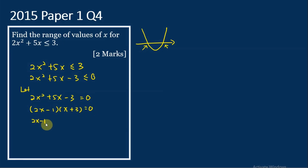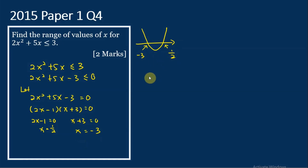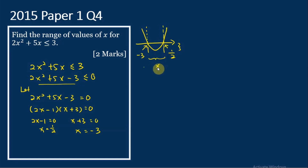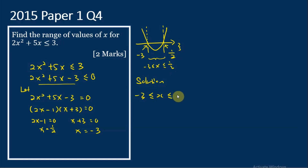Therefore, 2x minus 1 equal to 0 gives x equal to 1/2, or x plus 3 equal to 0 gives x equal to negative 3. So the x-intercepts of this graph are negative 3 and 1/2. For this quadratic inequality, the expression is less than or equal to 0, and we learned that the region where the expression is less than 0 is below the x-axis. For that region, x is in between negative 3 and 1/2. Therefore, the solution is negative 3 less than or equal to x less than or equal to 1/2.